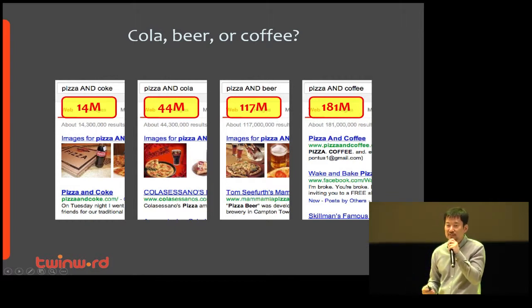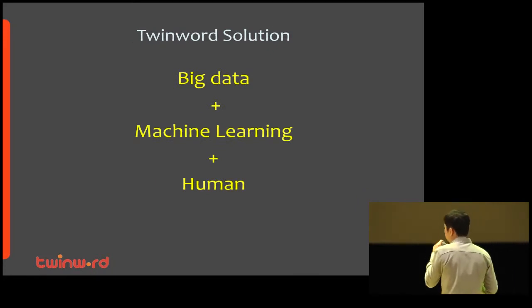I believe big data analysis with machine learning is not sufficient. So what is the solution? If machine learning fails, the only option is human. I will explain more about Twinord solution in four steps.